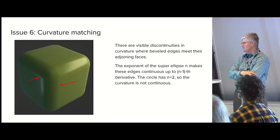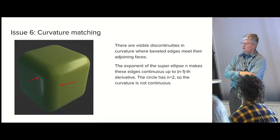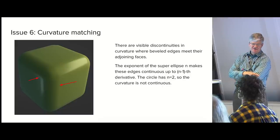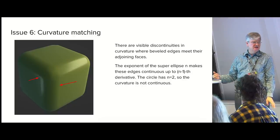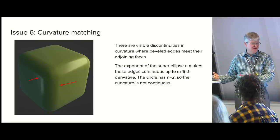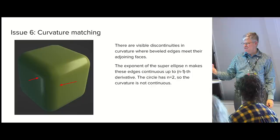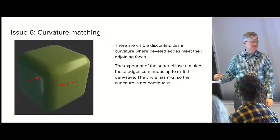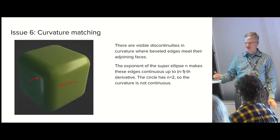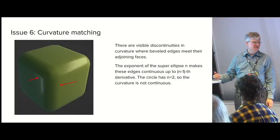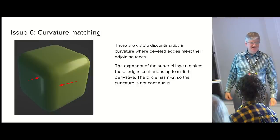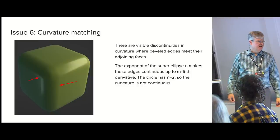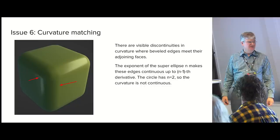Then there's the issue of curvature matching. Looking at the math of what the super ellipse formula does to the second derivative, you can show that you're guaranteed not to get continuity. So you see visible artifacts where the faces join — no matter how many segments you put in, there'll be a visible line there. Ideally that line wouldn't be there. Henrik has an idea that he'll talk about later to solve that problem.